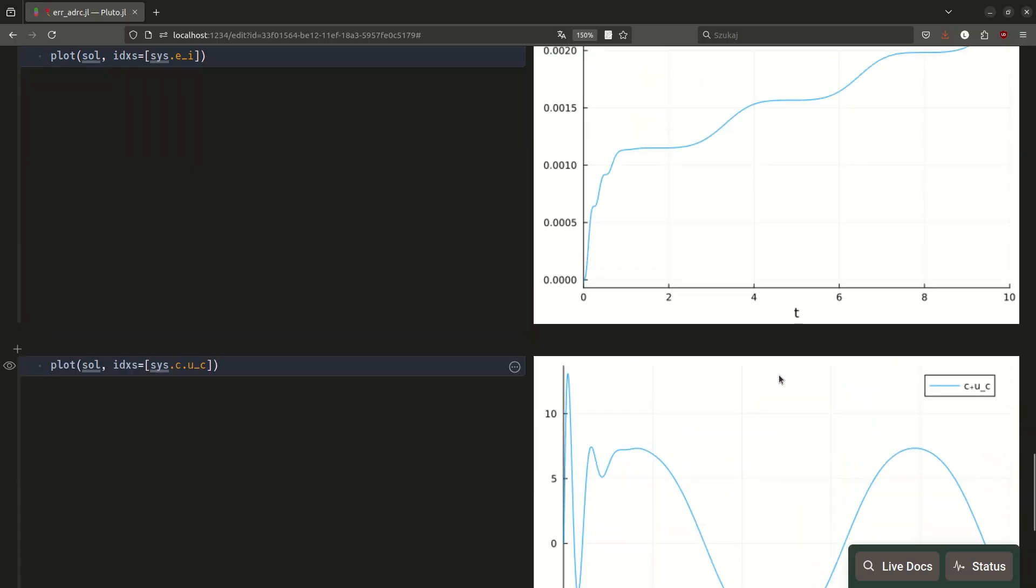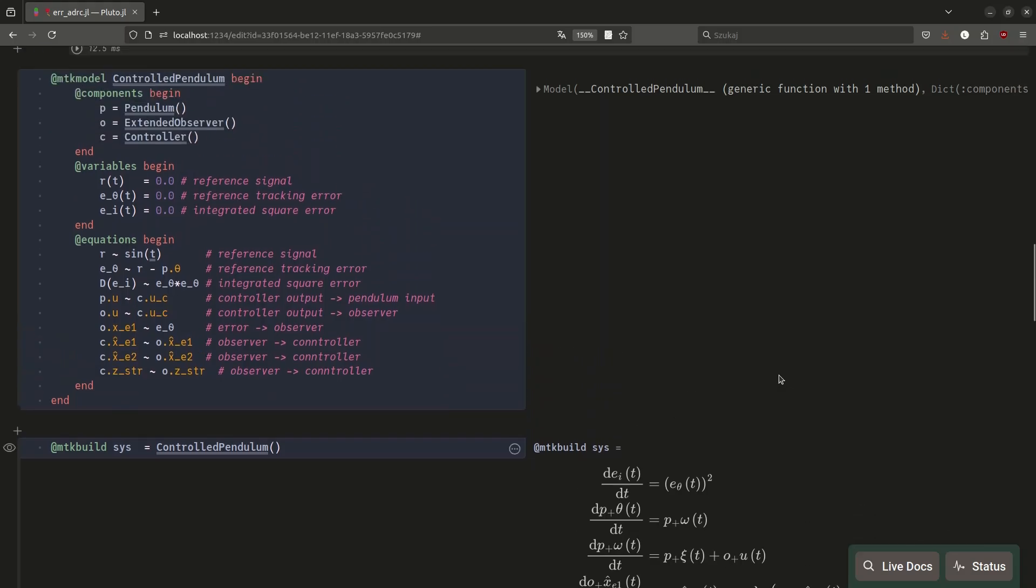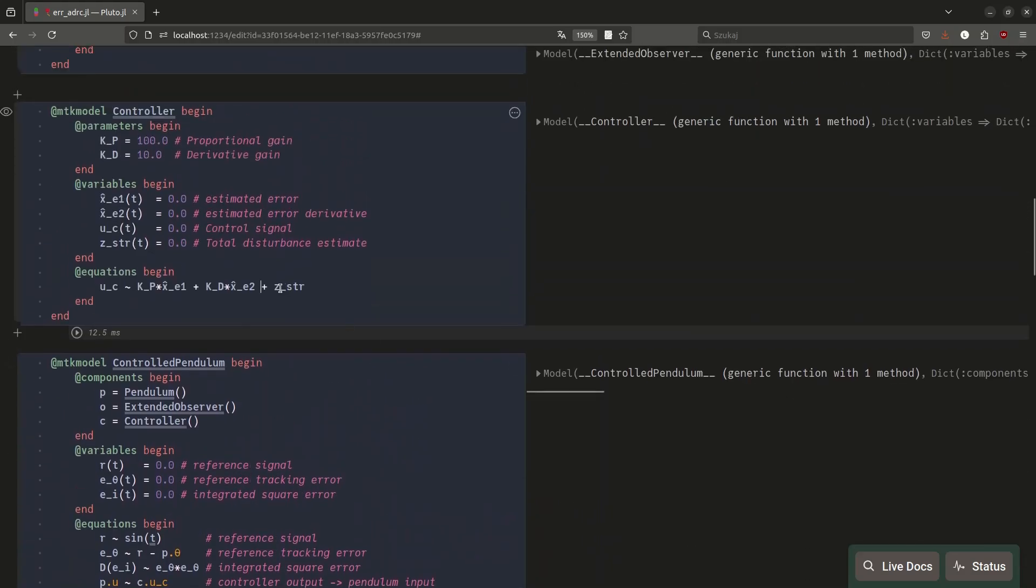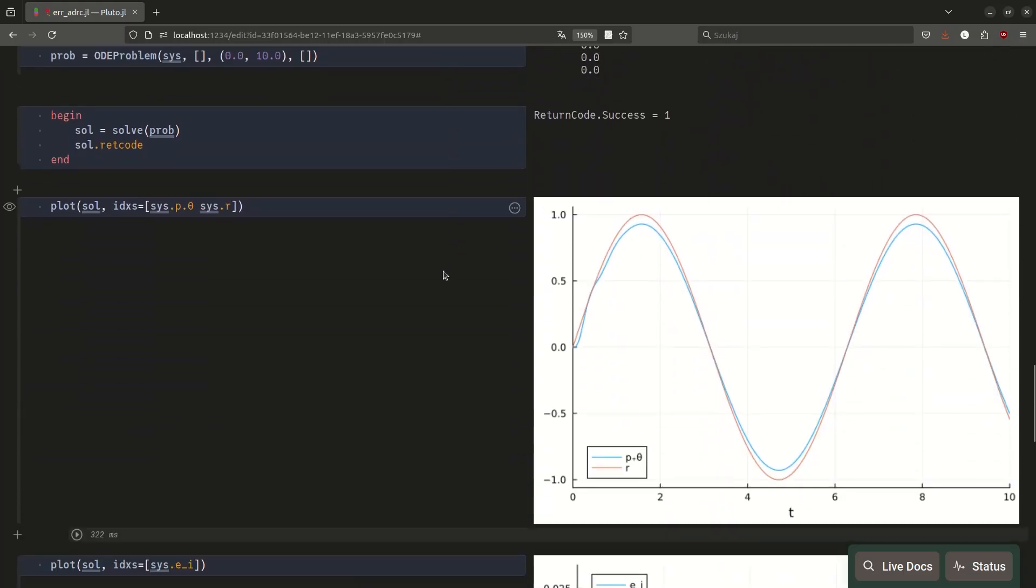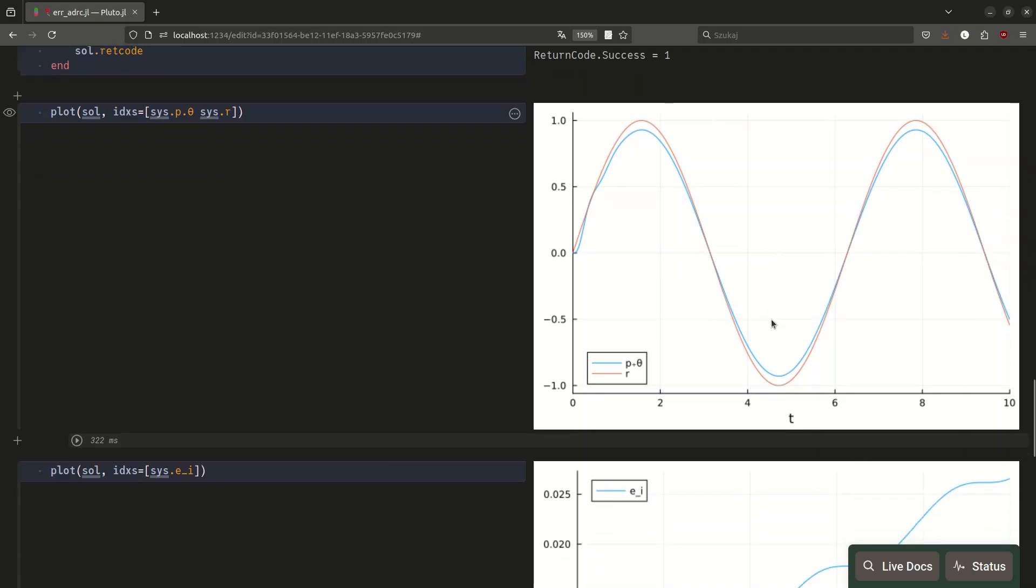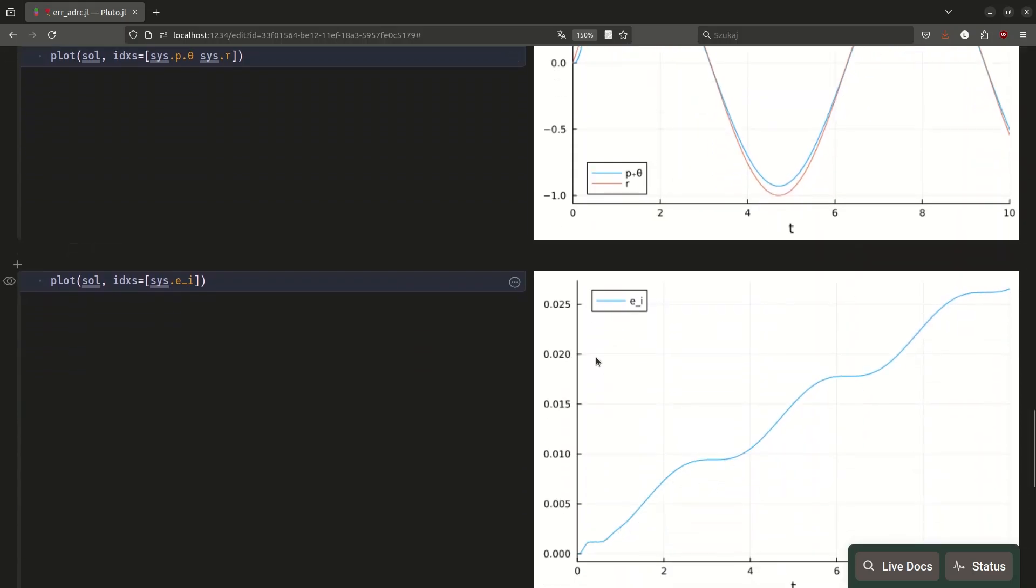And once again, we can ask the question whether this total disturbance correction term z star actually helps. So, once again, we can easily check it. Let's comment this out, run the simulation again, and look at the results. And here you can clearly see that without the z star, the tracking error is way bigger. And here you can see that this is like order of magnitude bigger, which means that, yes, that still works.